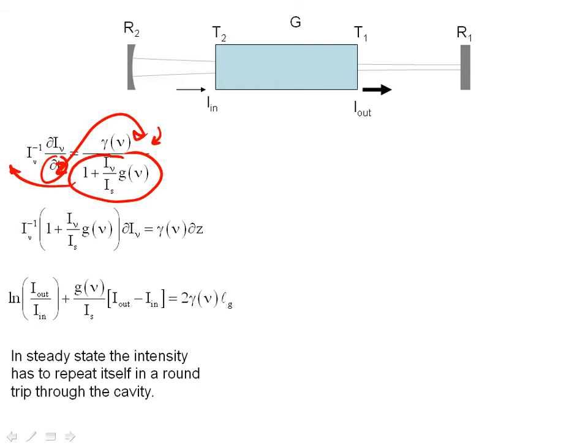And then essentially to solve this, I'm just going to integrate this from i in to i out, and I'm going to integrate this from 0 to L, the length of my gain medium. And when I go and do this integral, which is really pretty simple to do, I come out with an equation that essentially relates the input intensity and the output intensity to the line shape, which later on I'm going to set equal to 1, the length of the gain cavity and the gain.